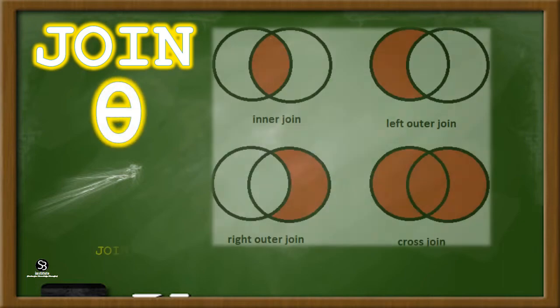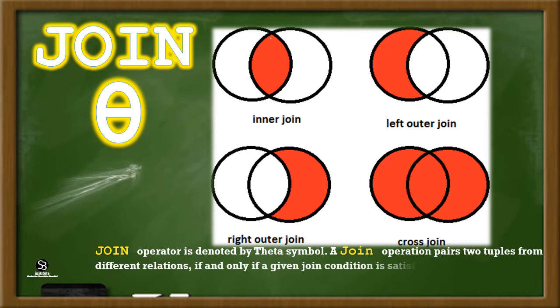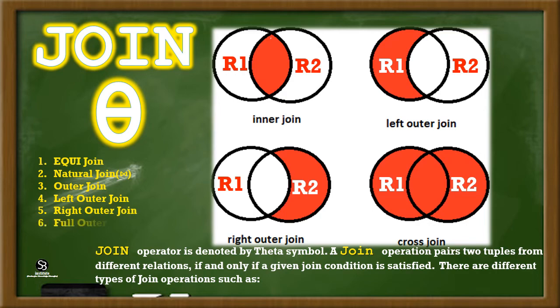The Join operator is denoted by the theta symbol. A join operation pairs two tuples from different relations if and only if a given join condition is satisfied. There are different types of join operations such as equi join, natural join, outer join, left outer join, right outer join, and full outer join.